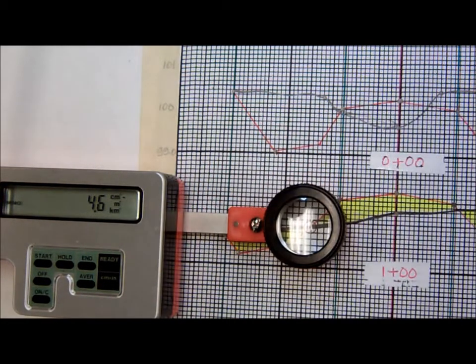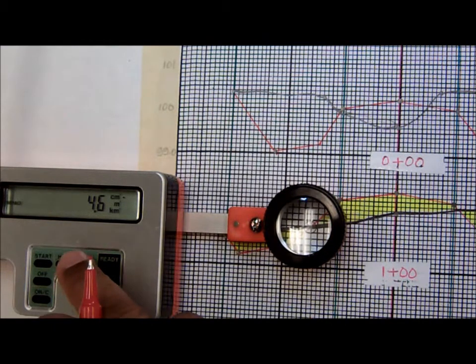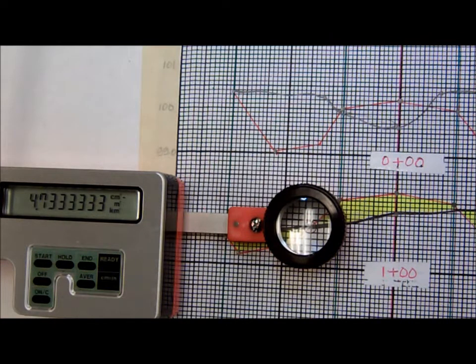I'm going to hit end again and I'm going to traverse the area one more time. And this time I have 4.6 as my reading. This is the third time that I've done it. So I don't need to do it a fourth time. I'm going to hit the end button and then the average button and I have 4.73 as my average.